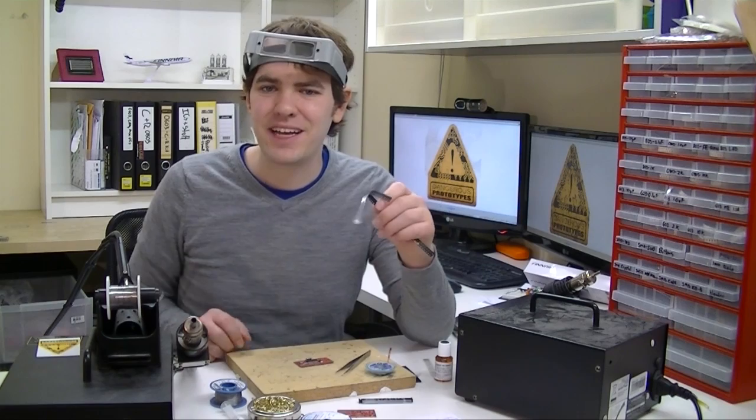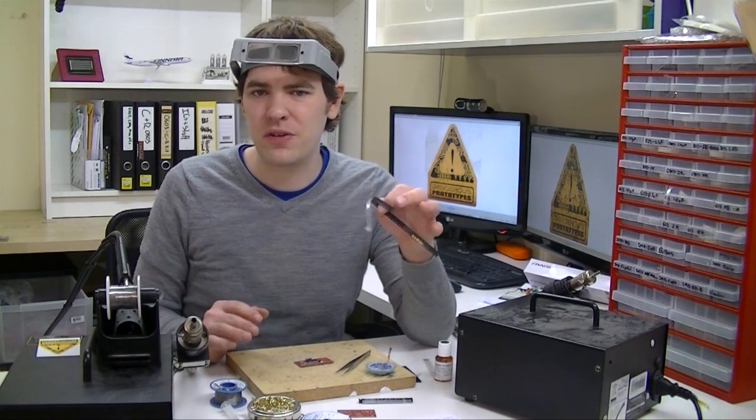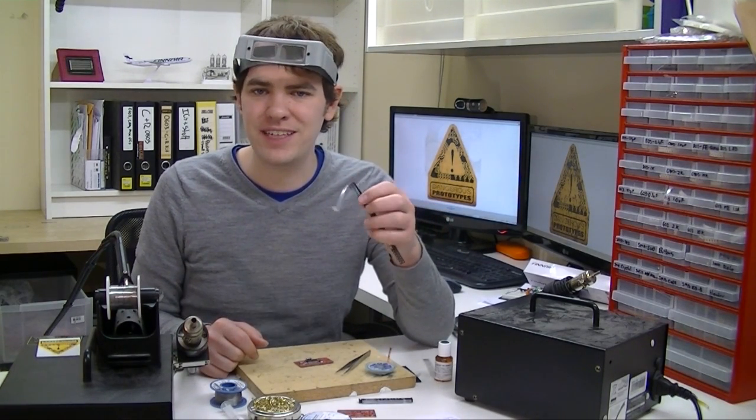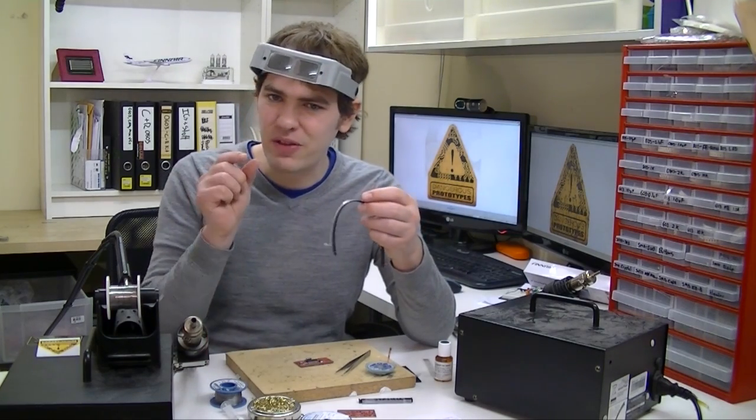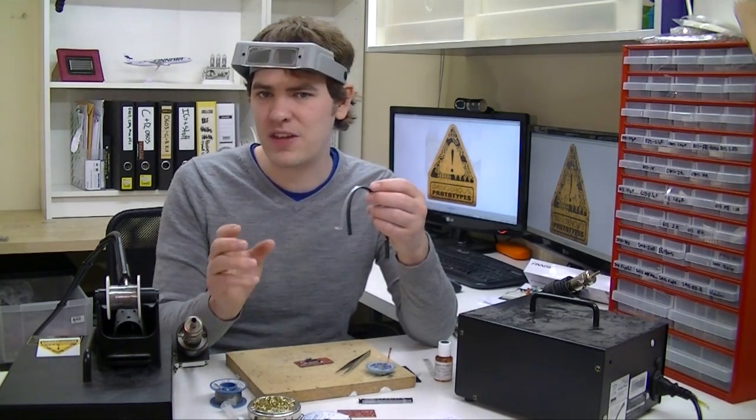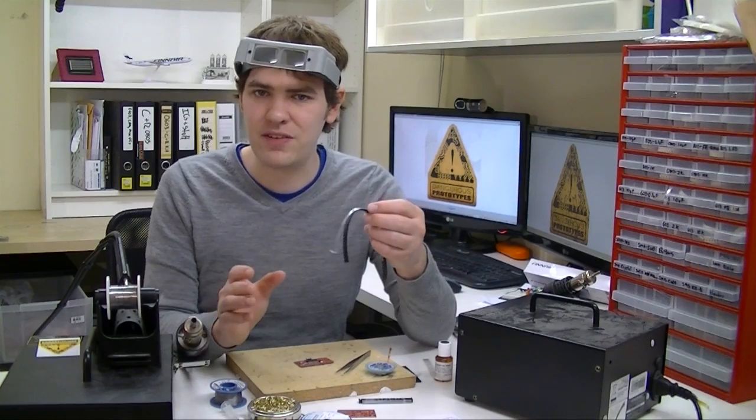Next up are the LEDs. Despite the fact that everything else on the board is 0603 size, we stick with 0805 LEDs. And the reason is LEDs are already a little bit smaller than the same size parts in any given size. And 0603 LEDs are really super tiny.